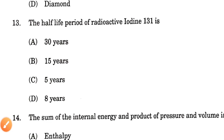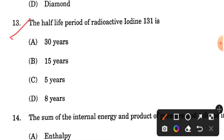Question number 13: The half-life period of radioactive iodine-131 is what? The half-life period of radioactive iodine-131 is 8 days — specifically 8.02 days. However, all the options given are in years: 30 years, 15 years, 5 years, 8 years. Since the options are incorrect, you should let us know the answer. You may be entitled to a grace mark because the options are wrong.